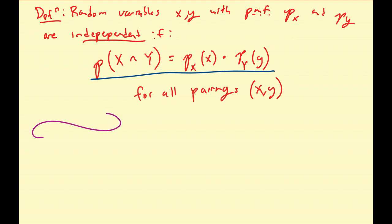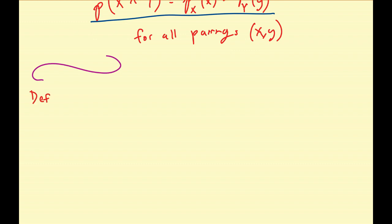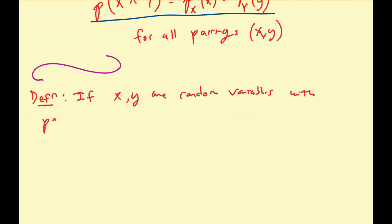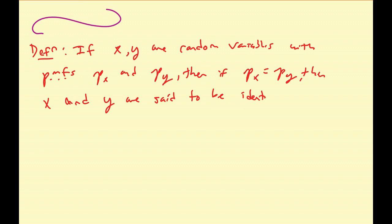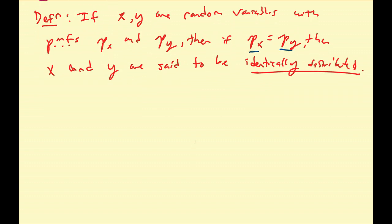Let's give another definition. If X and Y are random variables and P_X equals P_Y, then X and Y are said to be identically distributed. Just because the probability mass functions are equal does not mean the random variables themselves are equal — make sure you understand that distinction.